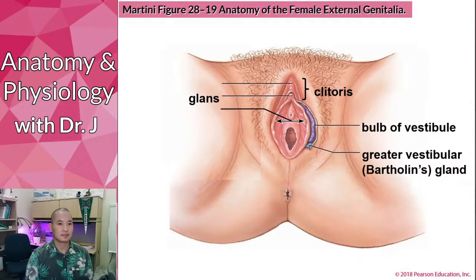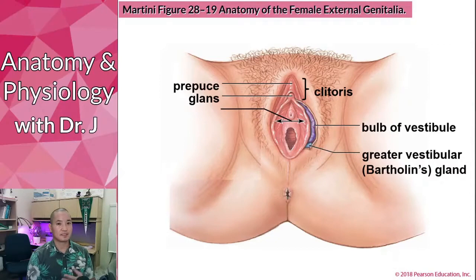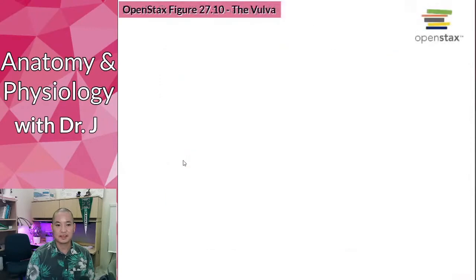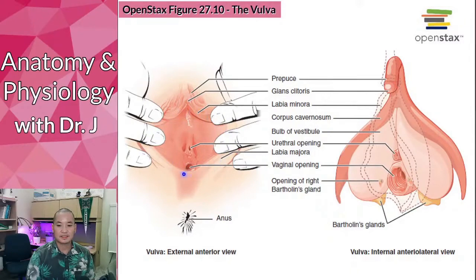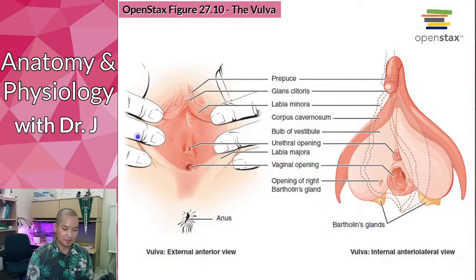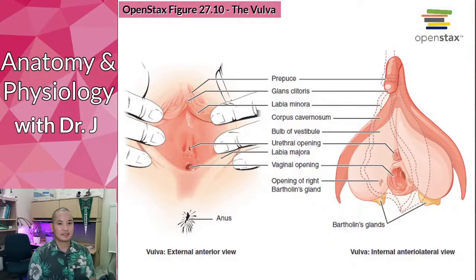The prepuce, sometimes called the clitoral hood in layman's terms, covers the glans of the clitoris — just as uncircumcised men have a foreskin covering the glans of the penis. The vestibule is the area within the labia minora but before the vagina. As you can see with the labia minora held aside, the vestibule is the area between the vaginal opening and the labia minora.